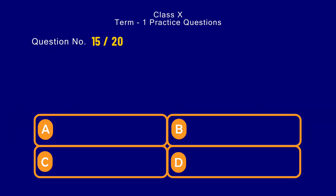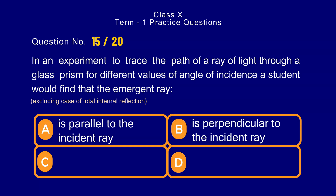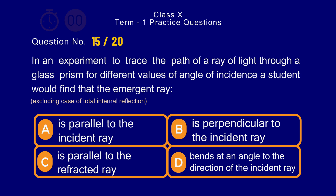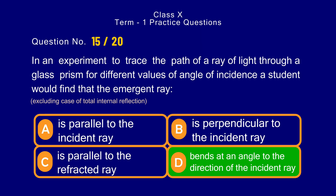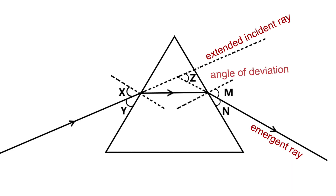Question number 15. In an experiment to trace the path of a ray of light through a glass prism for different values of angle of incidence, a student would find that the emergent ray — options: a) parallel to the incident ray, b) perpendicular to the incident ray, c) parallel to the refracted ray, d) bends at an angle to the direction of the incident ray. The emergent ray makes an angle with the direction of the incident ray, and this angle is known as the angle of deviation.